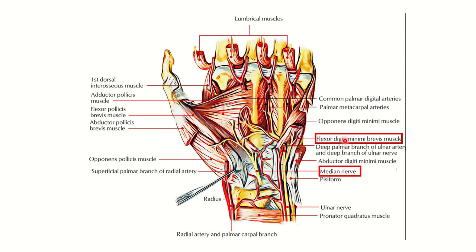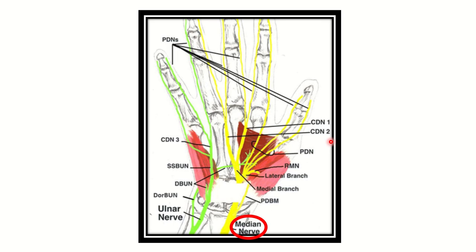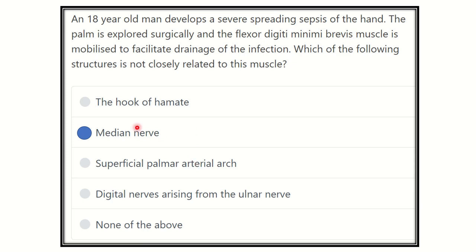However, the median nerve is located in the lateral aspect of the flexor aspect of the wrist — it is away from this muscle. In this picture, we can see the flexor digiti minimi brevis on the medial side, while the median nerve is located on the lateral side. Therefore, the median nerve is NOT closely related to the flexor digiti minimi brevis, and that is our answer.